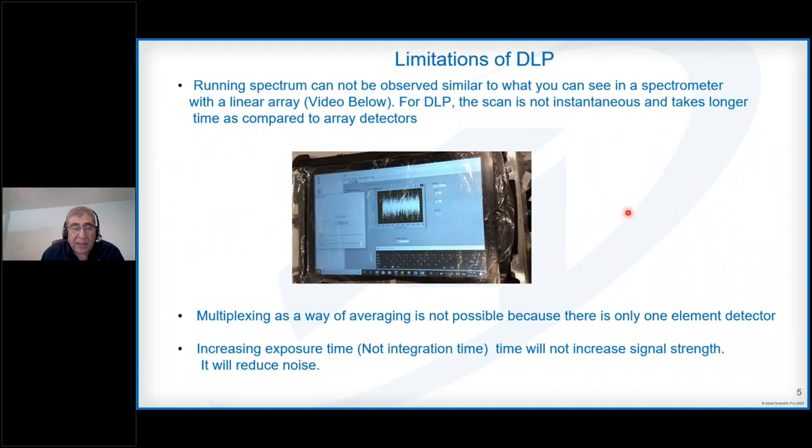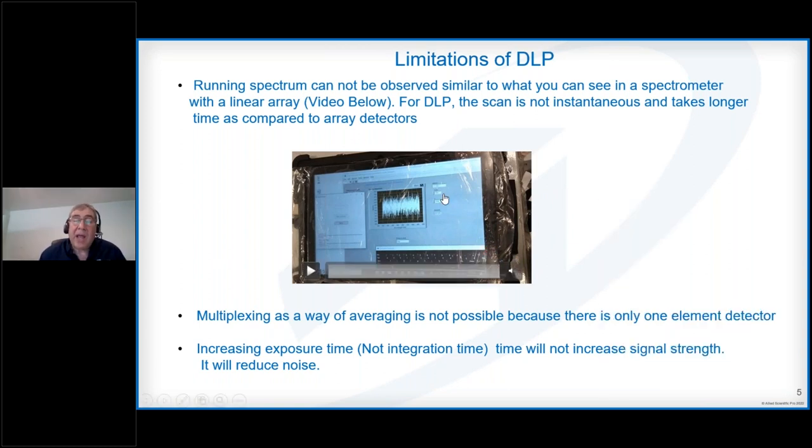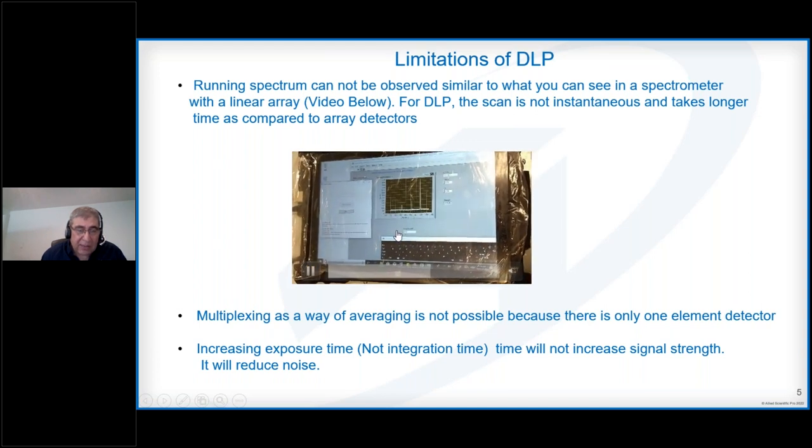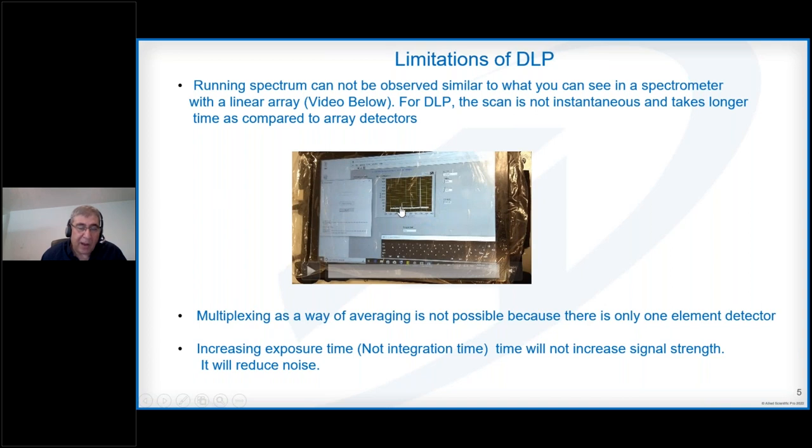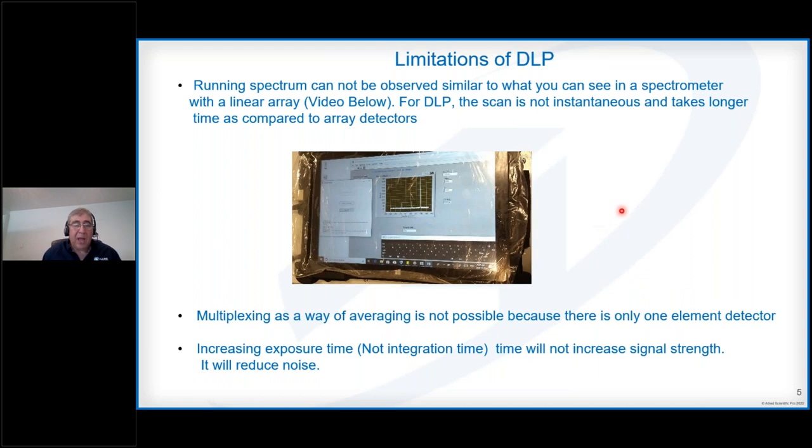Now, let's talk about the limitations. For this first limitation, I'm showing a video of a detector array spectrometer pointing towards a fluorescent lamp and it instantaneously detects the spectrum. As soon as it points towards the fluorescent lamp, it detects the mercury lines. The detection is instantaneous, and this is a good advantage for linear array. In case of DLP, this detection is not instantaneous because you're going bit by bit. You'll get a final snapshot of the spectrum. This is one limitation.